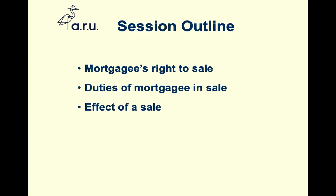We'll look at the impact of the sale — what it does as regards payment of the debt, the impact on a new purchaser, and the legal ramifications. We'll also consider whether a mortgagor can respond in some way — how the borrower would respond to an action for sale of the mortgage property — bearing in mind we've already considered how a mortgagor responds to repossession through section 36 of the Administration of Justice Act 1970, and how that operates in a sale context.